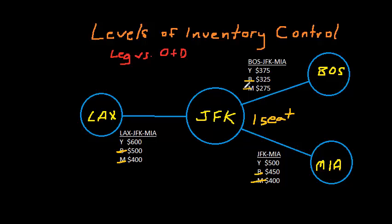So since the B and M classes are already shut down on JFK to Miami, they're effectively shut down on all of the itineraries. So at this point, the leg-level system has prevented the last seat from being sold to anything but a Y class customer. But there are three different Y class customers and the question is, which customer is going to get that seat? They each have different levels of contribution to the network.